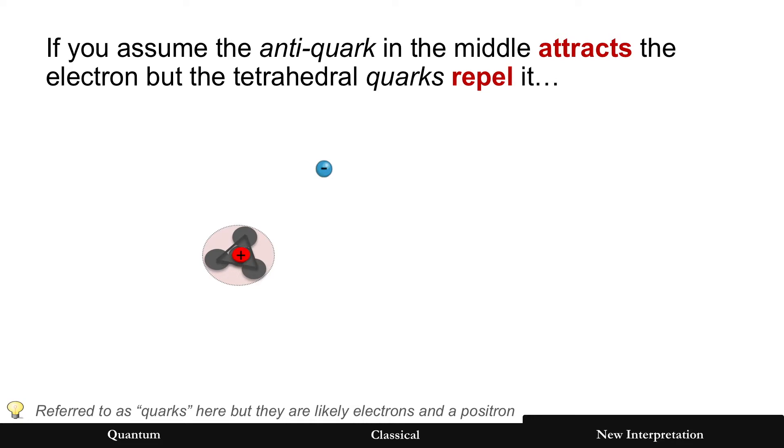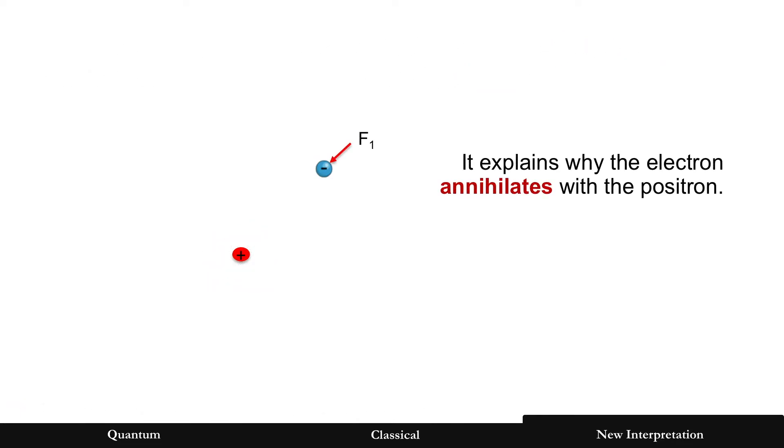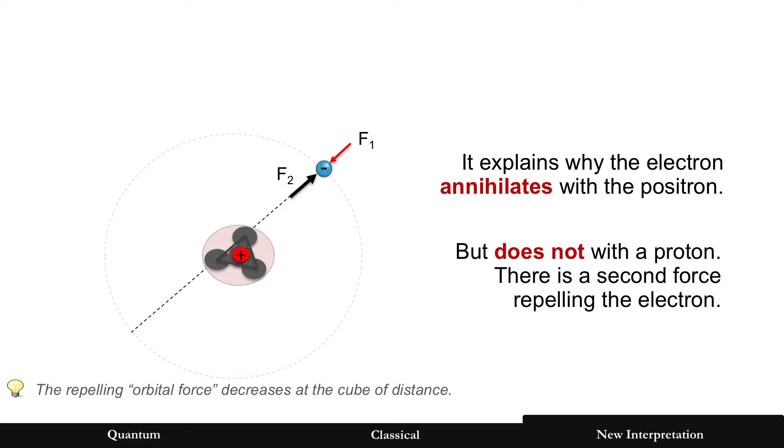So if you assume the antiquark in the middle of a proton attracts the electron, but the tetrahedral quarks repel it, that would explain why when it's only a positron, the electron is attracted and annihilates. But yet, when you add more around it, it's a proton with a second force that repels the electron. And the combination of those forces, the sum of the forces, creates that orbital.